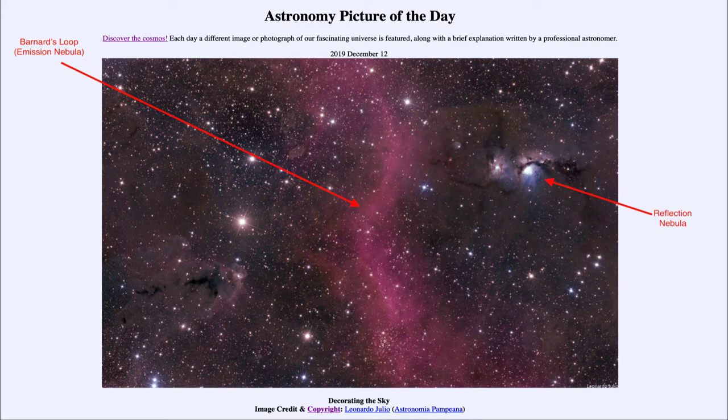This is part of what we call Barnard's loop. It doesn't look like much of a loop here, but if you take a wider field image as we've seen in the past, you can see an entire loop of material around the area of Orion.